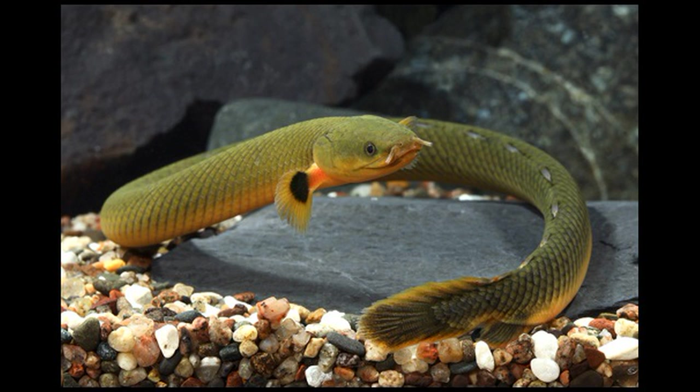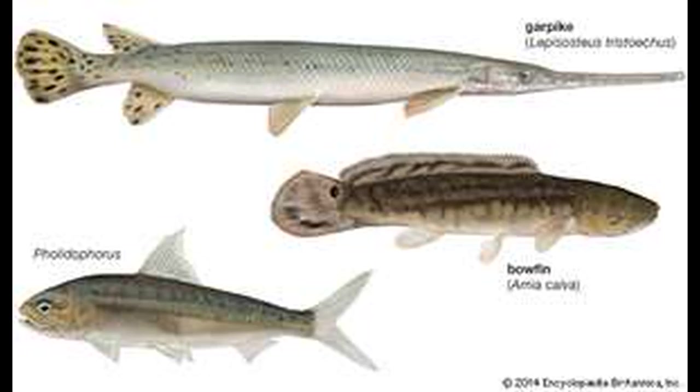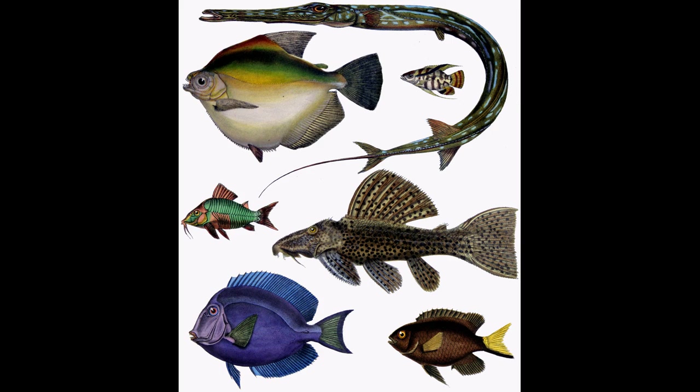Polypteriformes, containing bichirs and reedfish. Acipenseriformes, the sturgeons and paddlefish. And Holostei, the bowfins and gars. The remaining clade that includes all other ray-finned fish is Teleostei, or the completely bony fish.